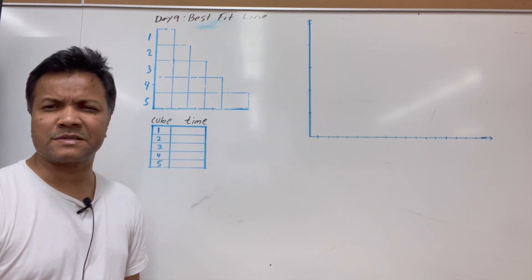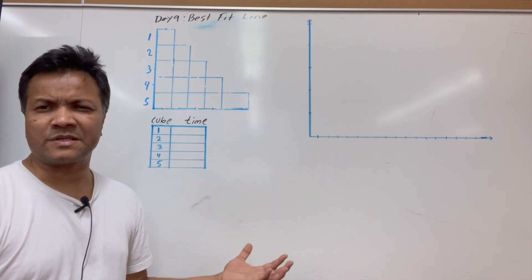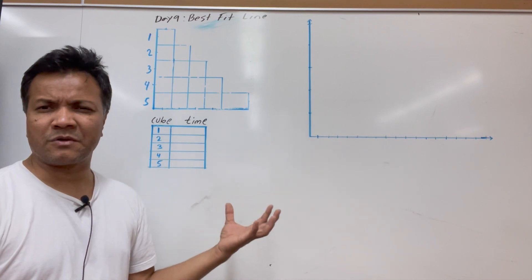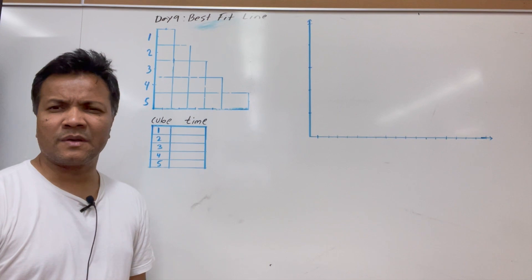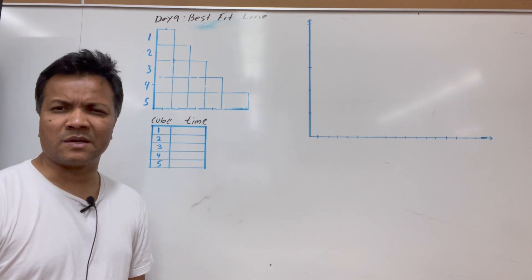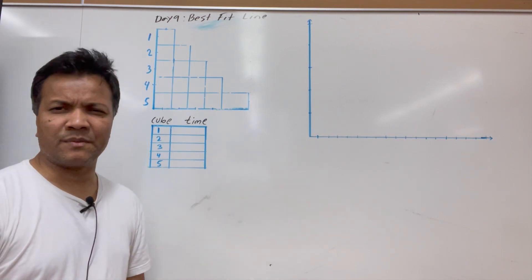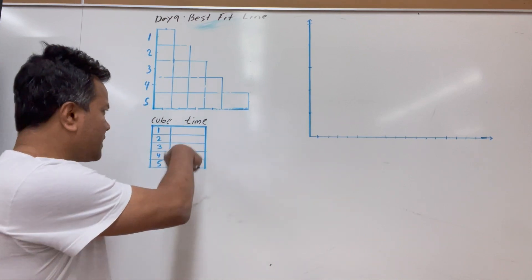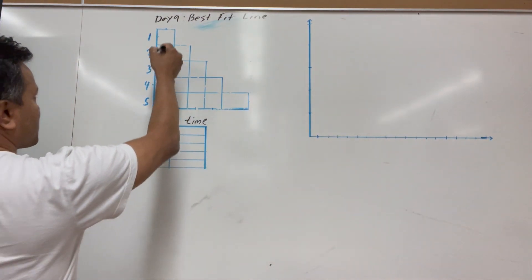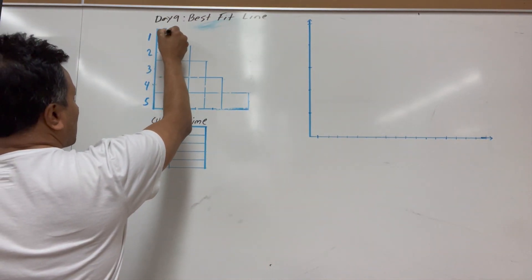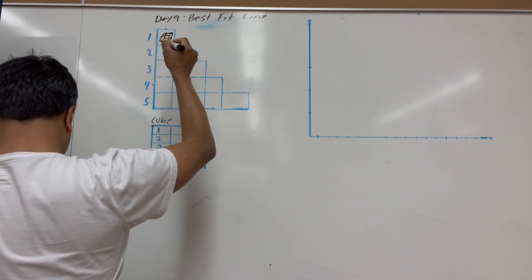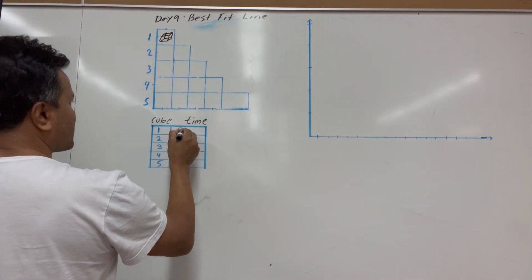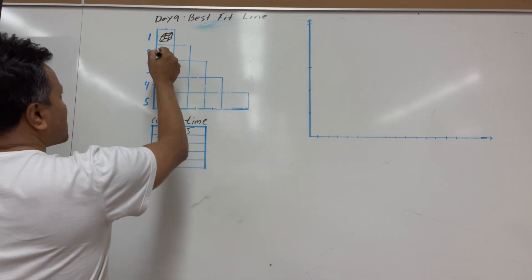I'm going to learn best-fit line and I'm going to collect some data by measuring how long it takes to construct one cube, two cubes, three cubes, four cubes, and five cubes. I have a stopwatch and I'll measure the time. So one cube takes 3.5 seconds.